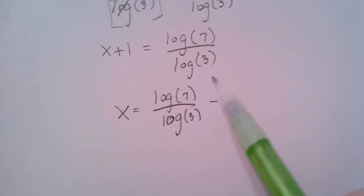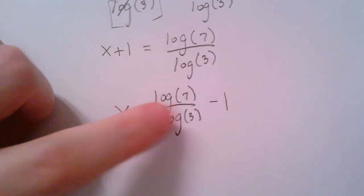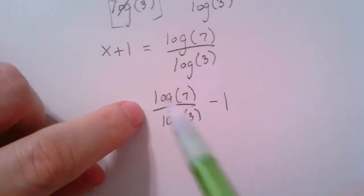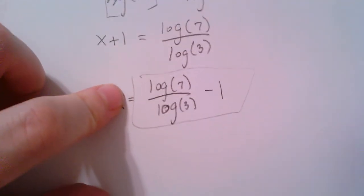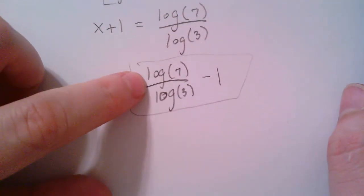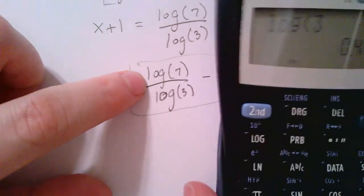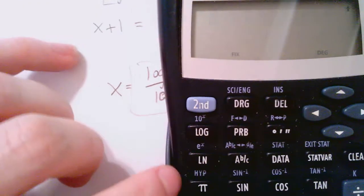And friends, this is what we call an exact answer. There's absolutely no rounding and a calculator was not involved. Anybody could plug this number into their calculator, this whole thing, and we would all get the same answer. That's because no rounding has taken place. So this is what we call an exact answer. Let's go ahead and find a rounded answer. So I'm going to show you how to do that as well.